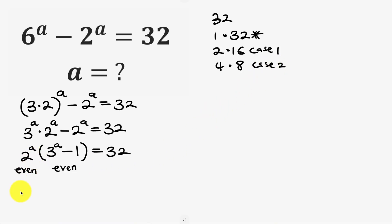So for the first case we have case 1. For case 1 we have 2 to power a times 3 to power a minus 1 equal to, write out the factors, we have 2 times 16. Now notice that 2 to power a is always smaller than 3 to power a minus 1.